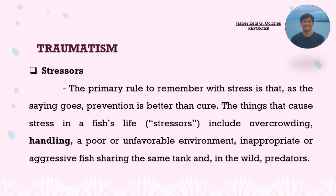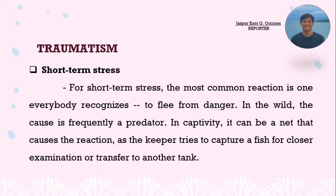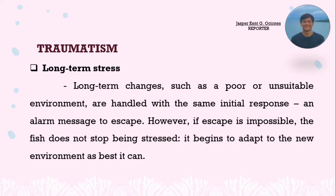The things that cause stress in a fish's life — what we call stressors — include overcrowding, handling, a poor or unfavorable environment, inappropriate or aggressive fish sharing the same tank, and in the wild, predators. For short-term stress, the most common reaction is to flee from danger — in the wild, frequently from a predator; while in captivity, it can be a net trying to capture a fish. For long-term stress, such as poor or unsuitable environment, the fish receives an alarm signal to escape, but if escape is impossible, it begins to adapt to the new environment as best as it can.